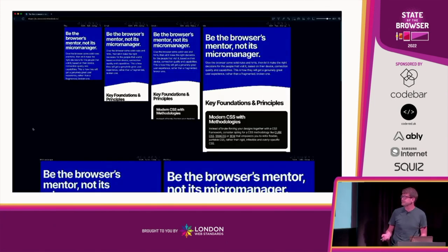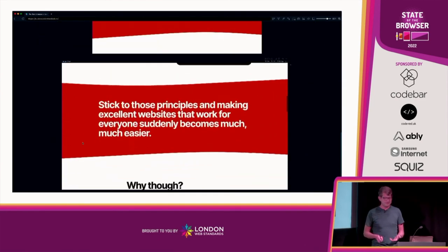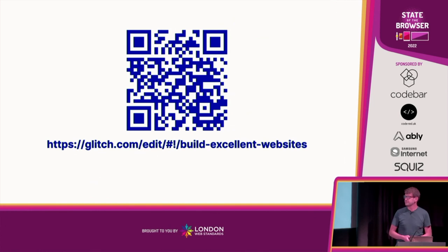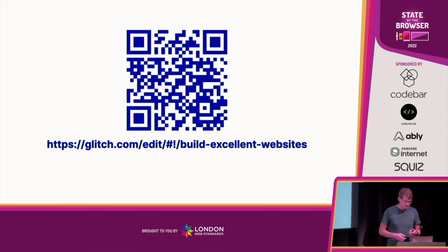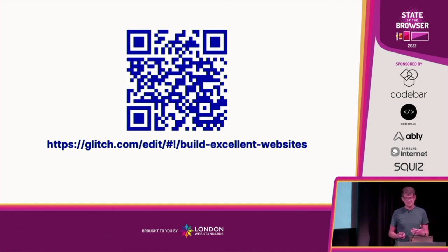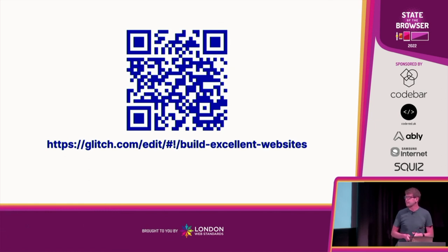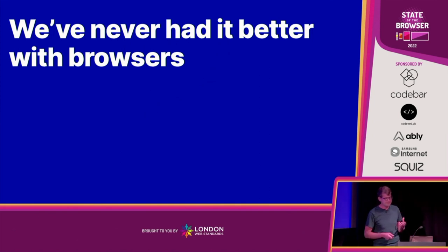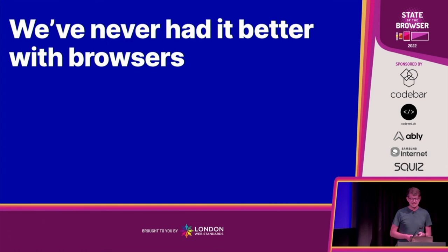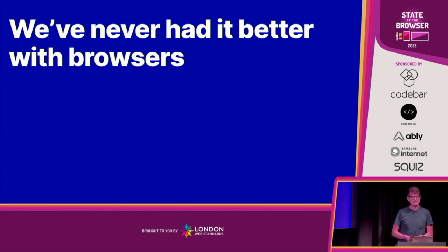I haven't covered every line of CSS because you'd have all fallen asleep by now. I put all the source code on Glitch — the best way to describe it is 'posh CodePen' — and you can see all the source code. It's built with Eleventy, and you can see all the design tokens, the bits of JavaScript that turn those into Tailwind, and then what Tailwind does with them. Let me wrap up with this: we've never had it better with browsers.